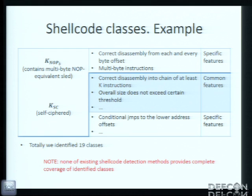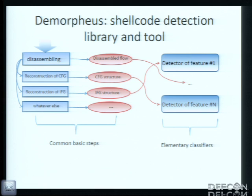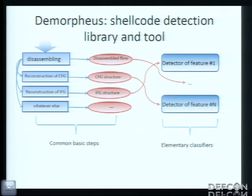We identified 19 classes, and here's a significant remark: none of the existing shellcode methods provide complete coverage of the identified classes. During analysis of existing shellcode methods, we noticed that almost all of them could be presented as some kind of combination of elementary classifiers or detectors of specific shellcode features. Moreover, all of them use some common steps during their analysis, like the disassembling stage, reconstruction of control flow graph, and reconstruction of instruction flow graph.